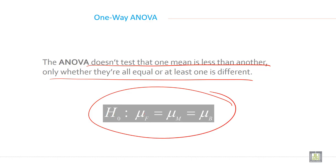Null hypothesis is mean of front, mean of middle, and mean of back all three will be equal. Alternate hypothesis in case of this will be at least any one mean is different from another.